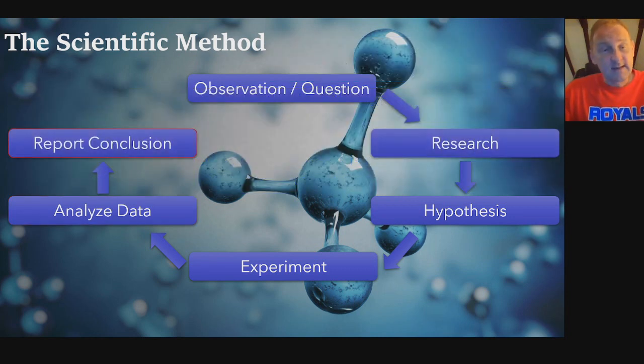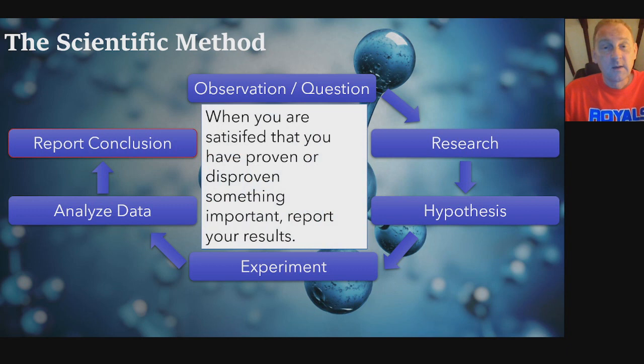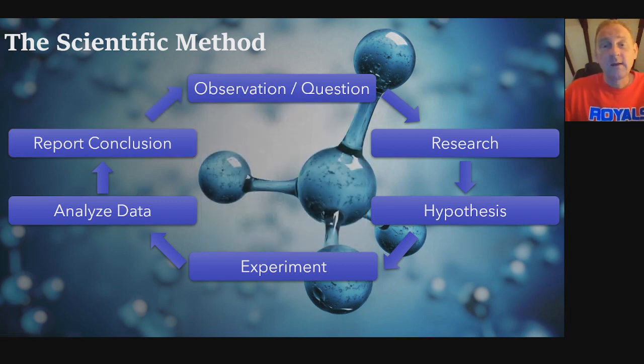Once you've collected that data and you've got your process down the way you like it, you report your conclusion. When you're satisfied that you've proven or disproven something important, report your results. This is so people don't keep reinventing the wheel. If you report your results, when someone else has a question and they do their research, they will find what you did and then they can add to that and make a new hypothesis and we keep building. This is the scientific method. It's a cycle that we keep building information that adds research for people. As these people do the research, they come up with new questions. This is the process that's been going on since about the 17th century in science. It's not perfect, but it sure is better than anything we've done before.